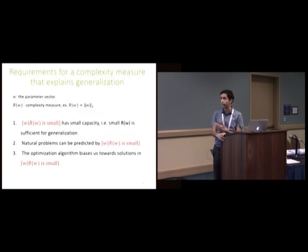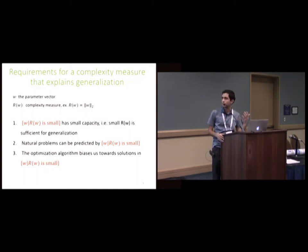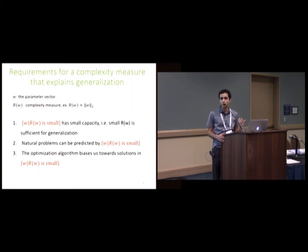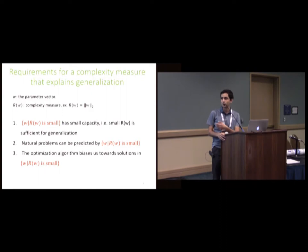How can we find a complexity measure for neural nets that corresponds to what is happening in practice? What we expect from such a complexity measure — let's say W is the parameter vector and R(W) is the complexity measure — is that the set of neural nets with small complexity measure has small capacity, so we want to prove it has generalization. We also want to show that all natural problems we are interested in can be expressed by this class, and that optimization algorithms are biasing toward solutions in this set.